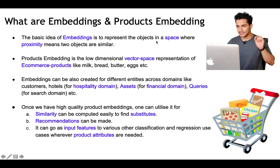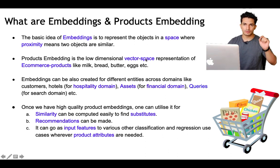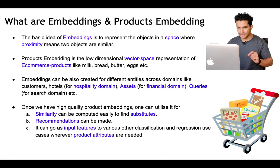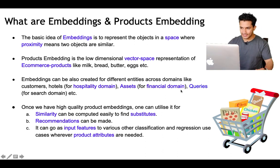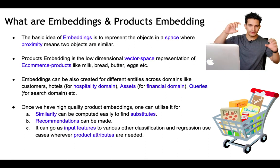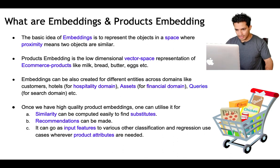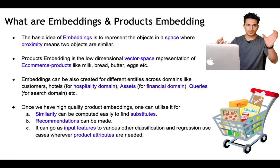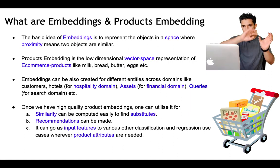The basic idea of embedding is to represent objects in a space where proximity means two objects are similar. Product embeddings are the low-dimensional vector space representation of e-commerce products like milk, bread, butter, eggs, etc. Embeddings can also be created for different entities across domains: for hospitality, embeddings could be of customers and hotels; for financial domains, of assets; for search domains, of queries. With high-quality product embeddings we can find substitute items, power recommendation systems in one-tower or two-tower models, and use them as input features to classification and regression models.